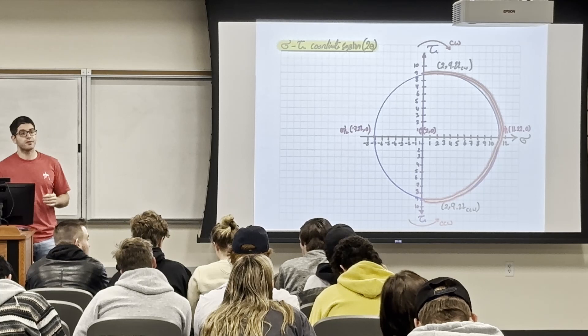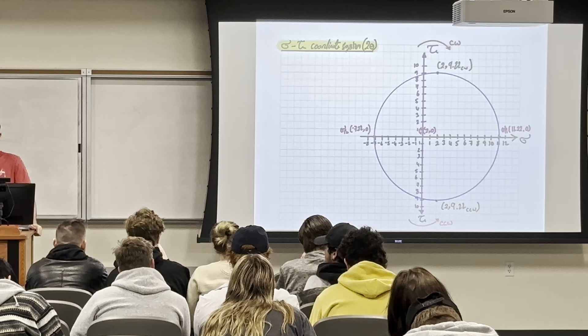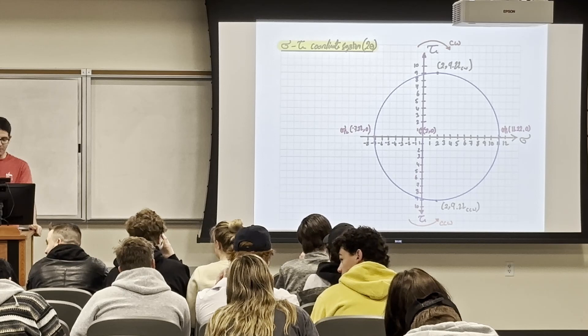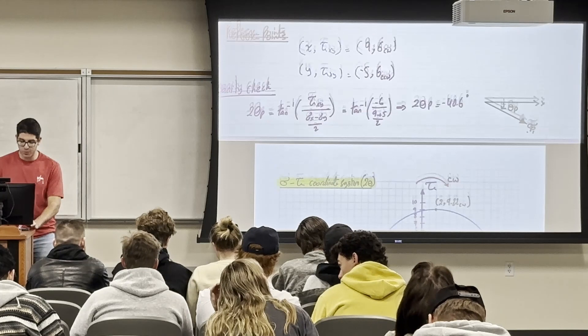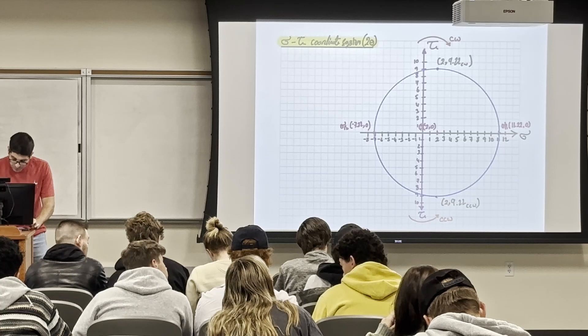Now let's continue filling out the sketch. The x-plane rotated to the principal plane by θ_p = 40.6/2 = 20.3°. In the x-y coordinate system we work with theta; in the σ-τ coordinate system we work with 2θ. The x-plane (9, 6 clockwise) rotates to the σ_p1 plane, which has stress 11.22 ksi tension and zero shear.